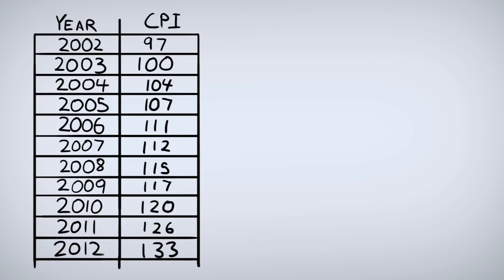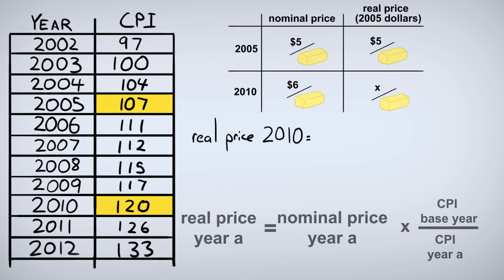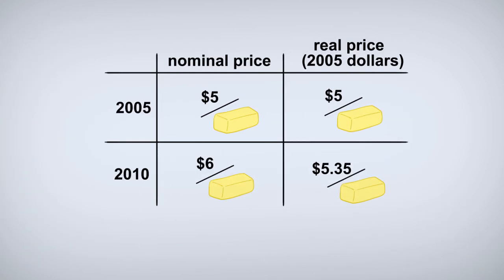So let's say the consumer price index in 2005 was 107 and the consumer price index in 2010 was 120. To find out the 2010 price of butter expressed in 2005 dollars, we take that $6 that is in 2010 dollars and multiply it by the base year consumer price index, the 2005 consumer price index, and divide it by the consumer price index from the year we're working from, the 2010 consumer price index in this example. And what we get is $5.35. And what this is telling us is that the real price of butter increased by 35 cents from 2005 to 2010.